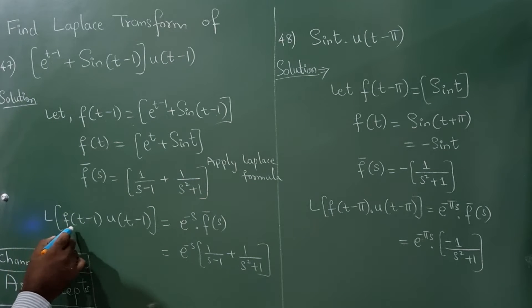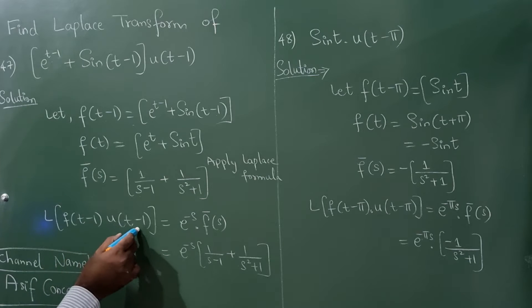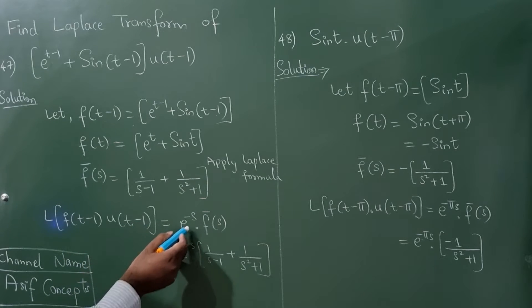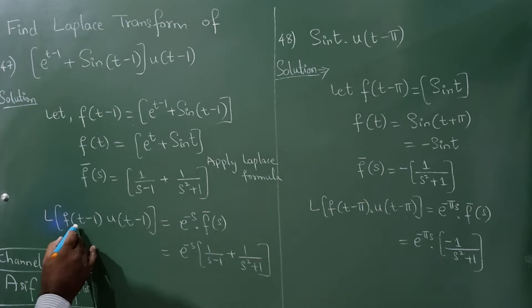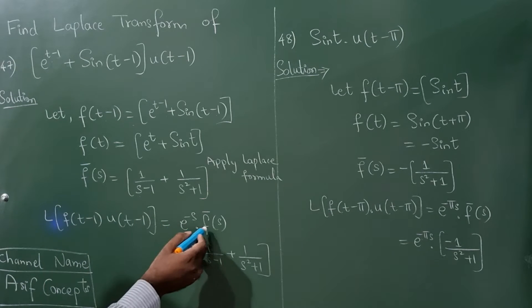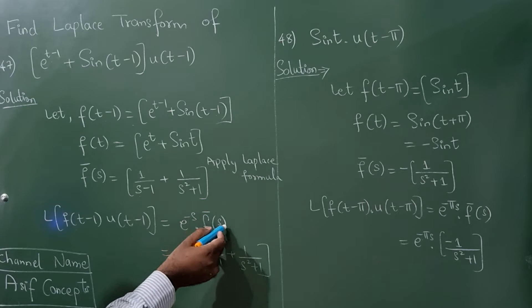Now I am going to write Laplace of f of t minus 1 into u of t minus 1. Since it is t minus 1 I have written e raise to minus s and here this one I have written f dash of s.